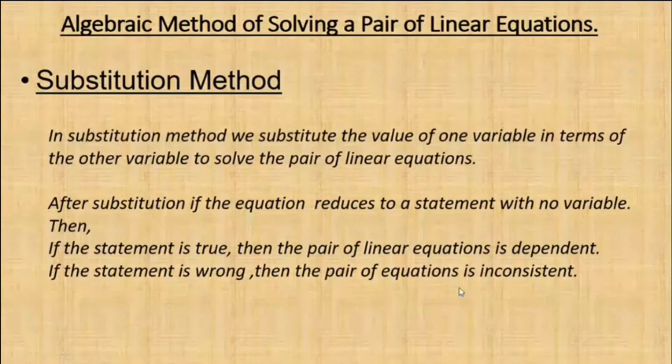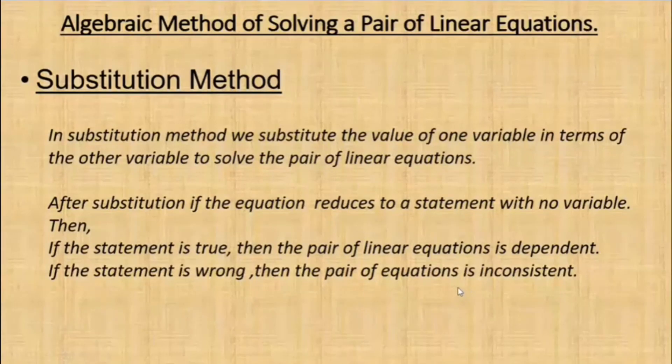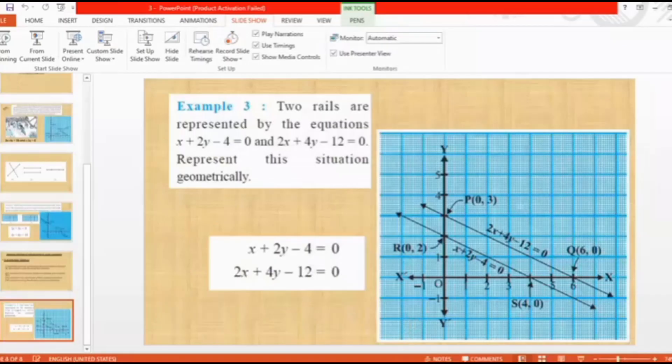So these are the notes: if the pair of linear equations is consistent, then we will definitely get one solution. If the pair of linear equations is dependent, then you will reach a true statement without variable. And if the graphs are inconsistent, then a wrong statement without the variable. That's all the content — now we need some more practice.